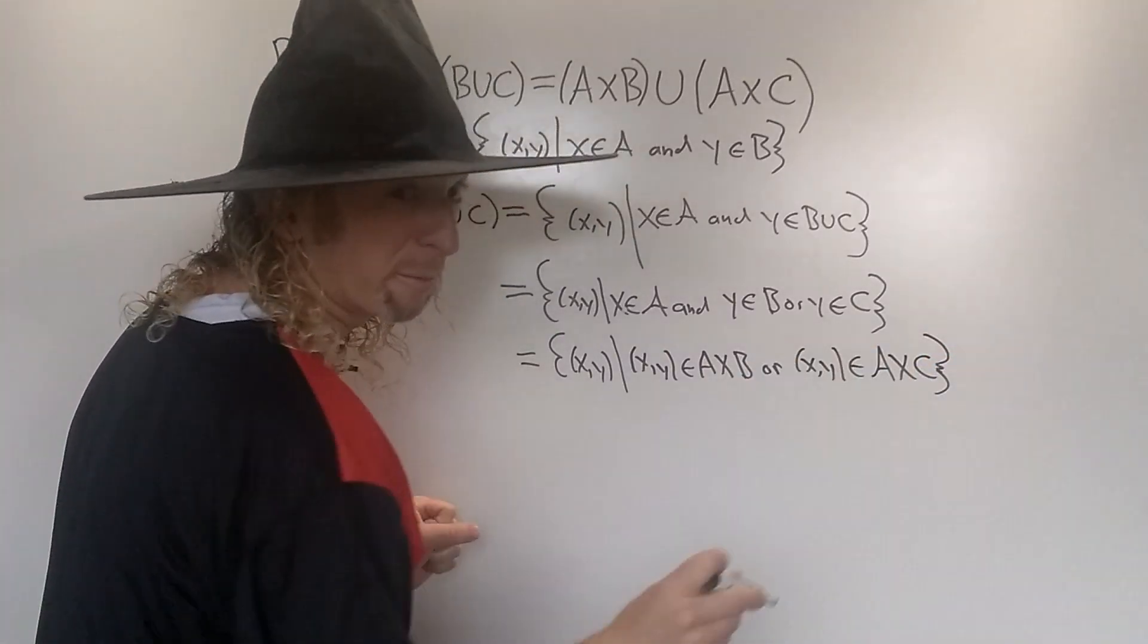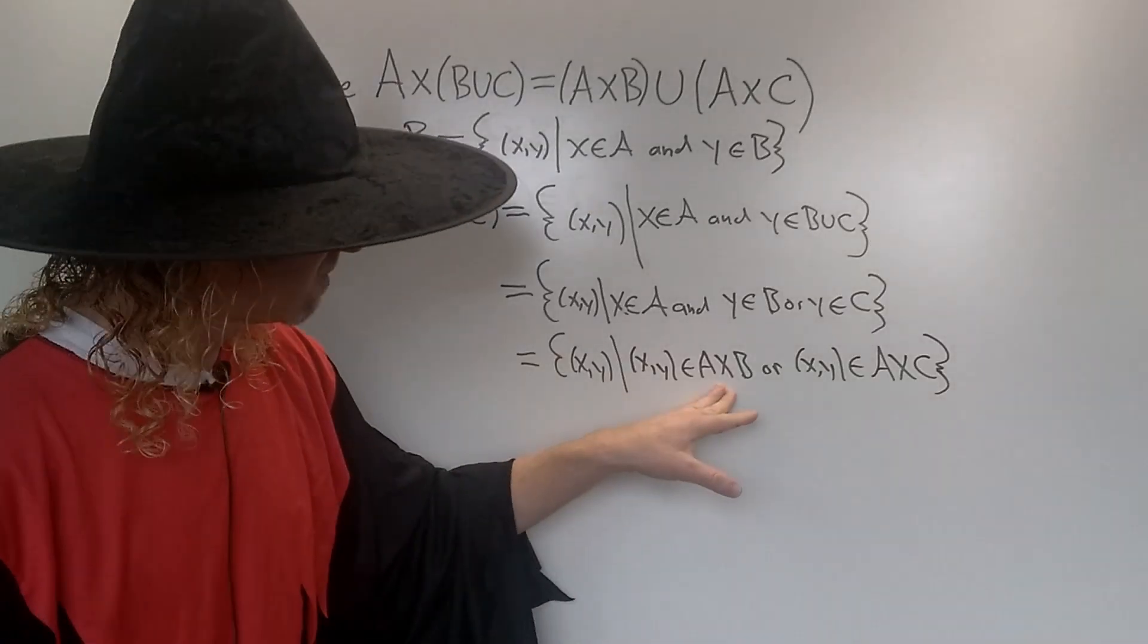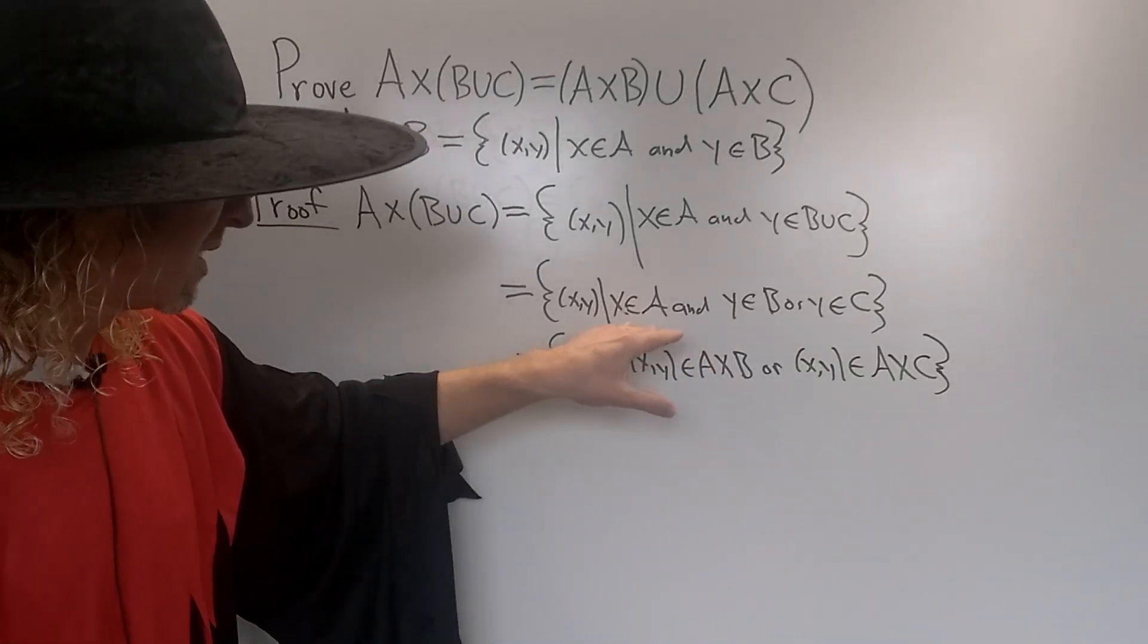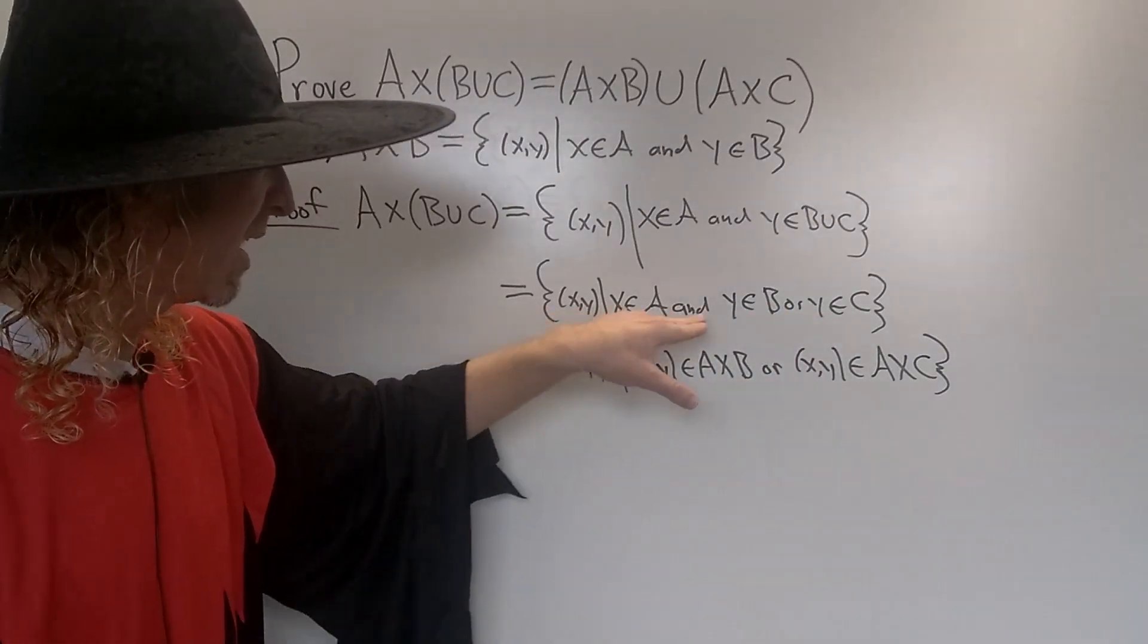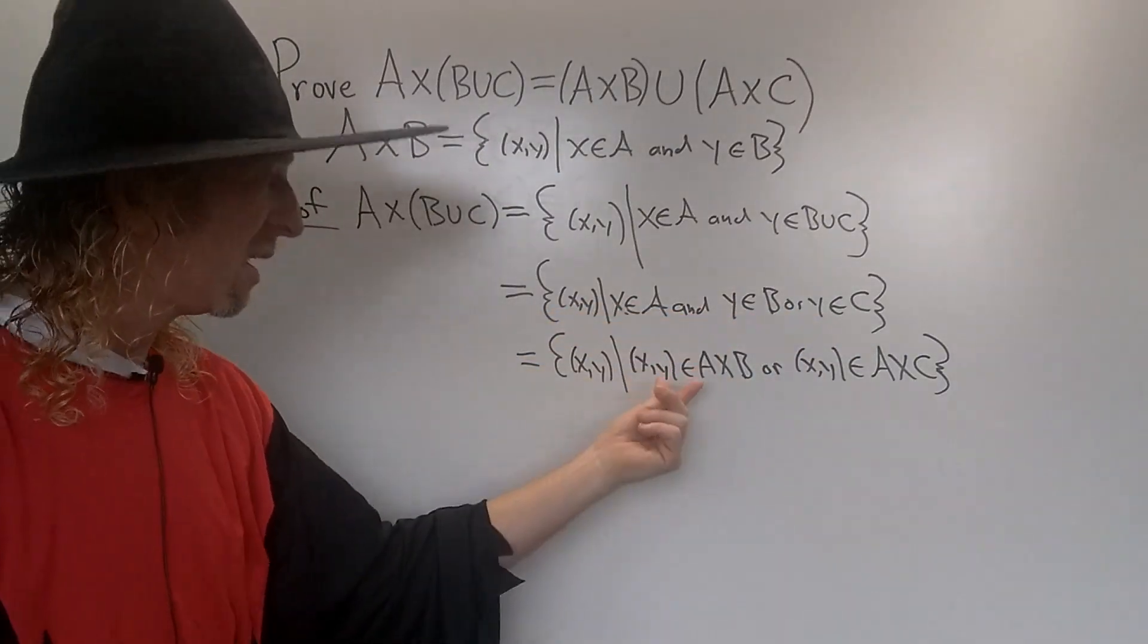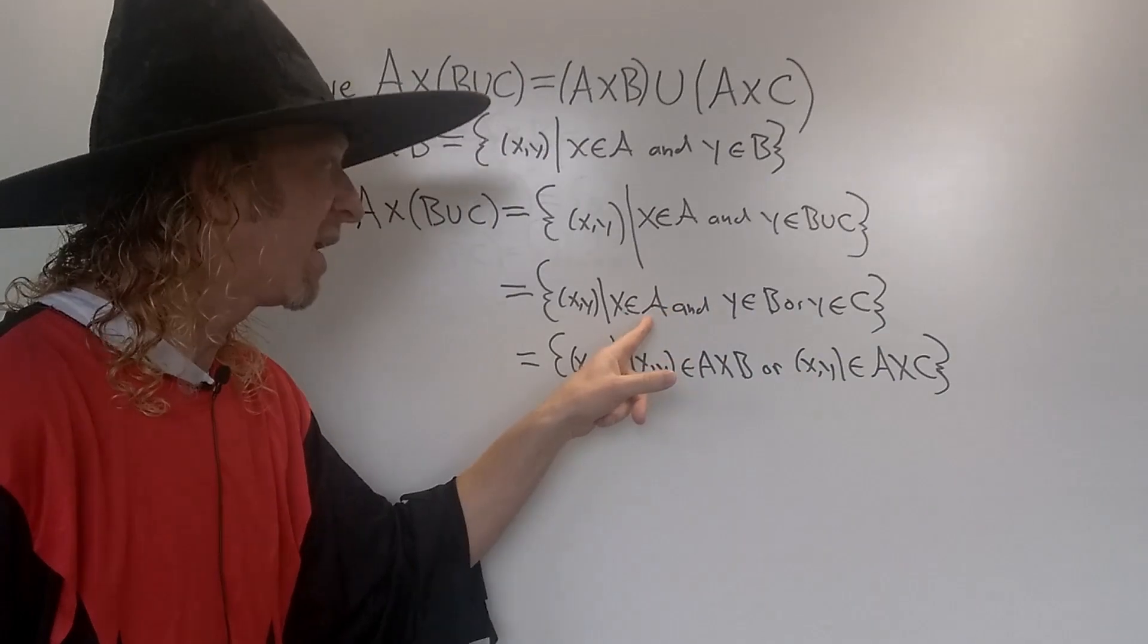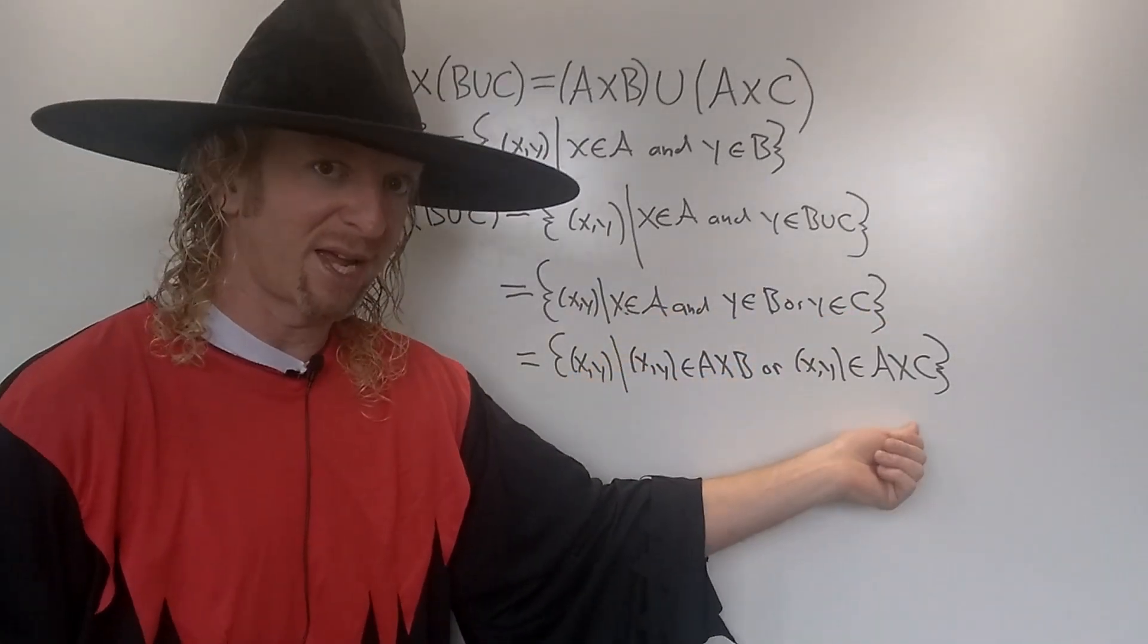Remember, these are sets of ordered pairs, right? So A×B is a set of ordered pairs. So here the statement says that x∈A and y∈B or y∈C. So if you have x∈A, you can have x∈A and y∈B—that means that happens. Or you can have x∈A and y∈C—that means that happens.